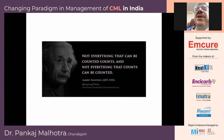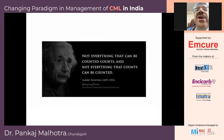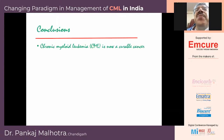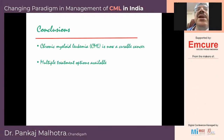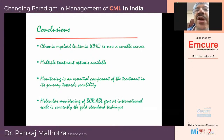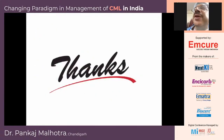In conclusion: chronic myeloid leukemia is now a curable cancer, multiple treatment options are available, and monitoring is an essential component of the treatment journey towards curability. Molecular monitoring of the BCR-ABL gene at an international scale is currently the gold standard technique. As Albert Einstein said — not everything that can be counted counts, and not everything that counts can be counted. Thank you very much for your kind attention.